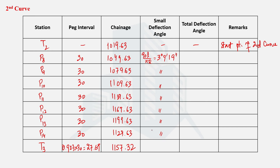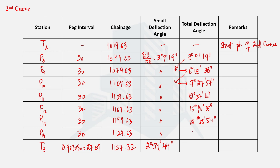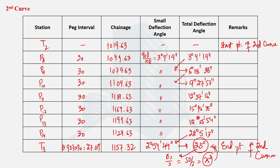The small deflection angle is the same for all intermediate points, but for the last partial interval it is 2° 54' 44''. The total deflection angle starts at 3° 09' 19'' and is cumulatively added for each successive point. For the last point, adding the final small deflection angle gives approximately 25°, which is half of the second curve's deflection angle of 50°. Hence our calculations are correct and this is the end point of the second curve. Both curves are simple circular curves and can be set out using the deflection angle method, which is quite accurate.